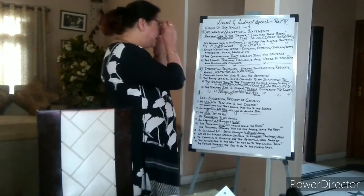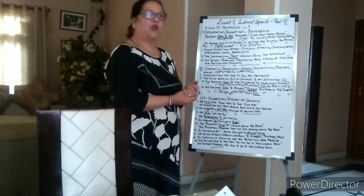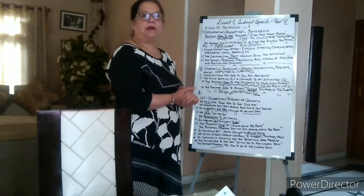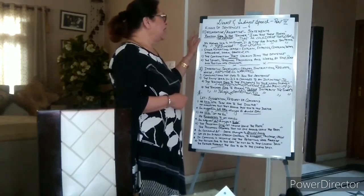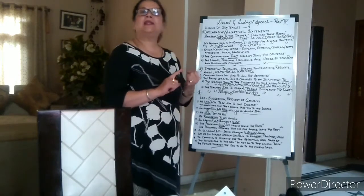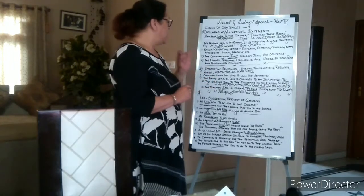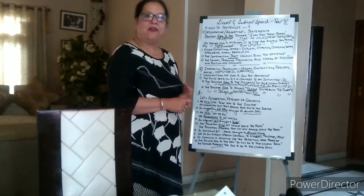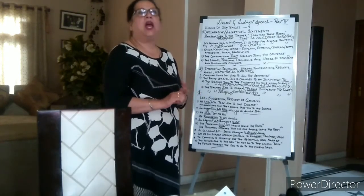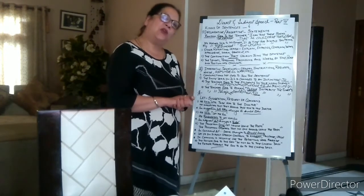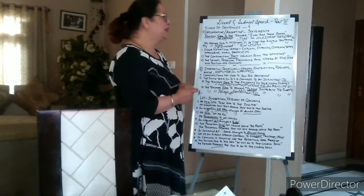As I've written here, there are four kinds of sentences, and I'm sure all of you must have done this at some time. The kinds of sentences are: number one, declarative or assertive sentences; number two, imperative; number three, exclamatory; and number four, interrogative sentences. So these are the four kinds of sentences.